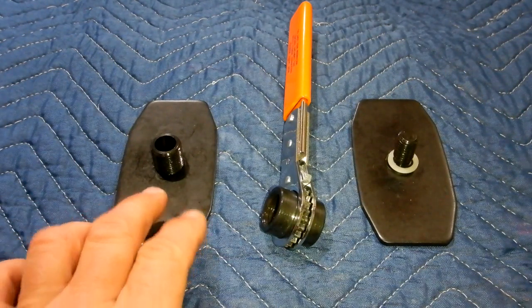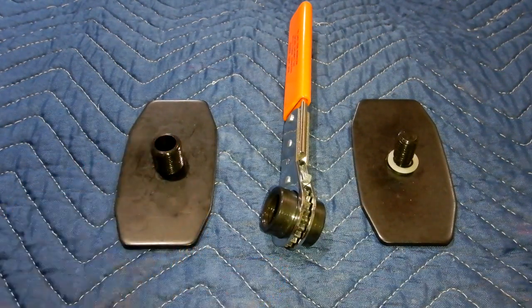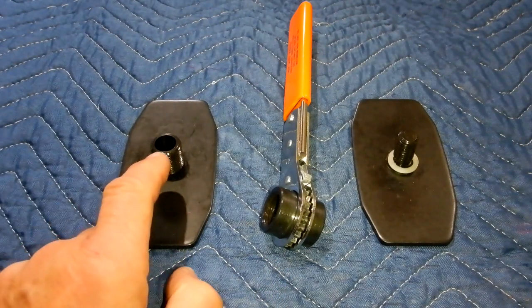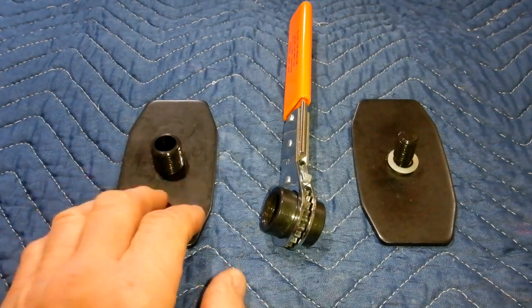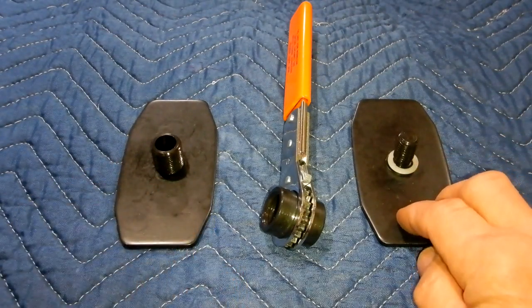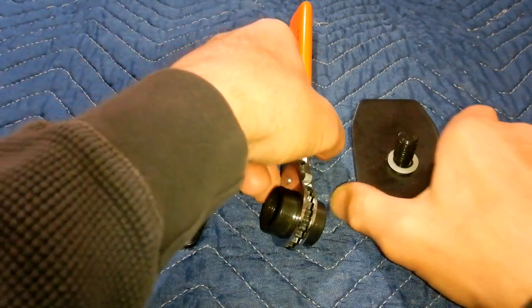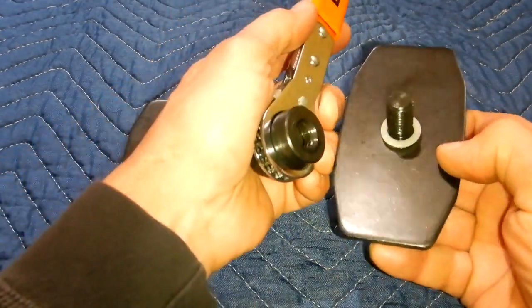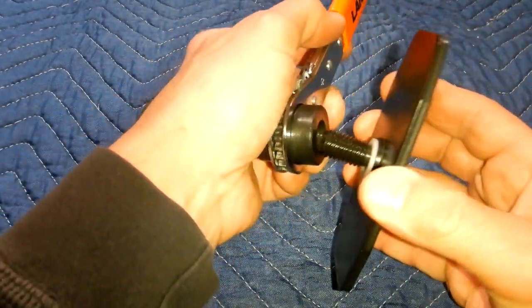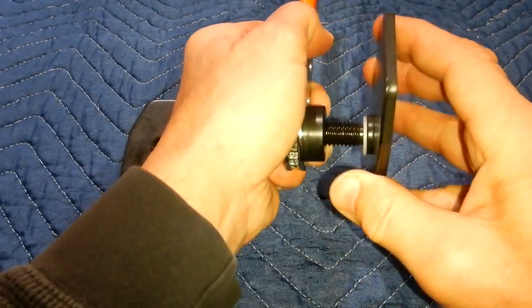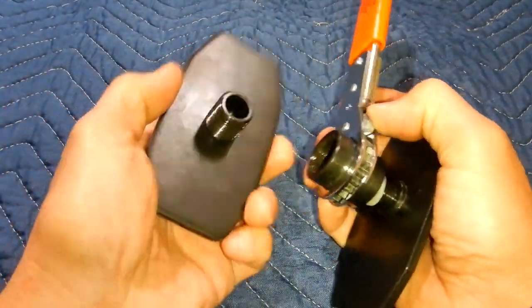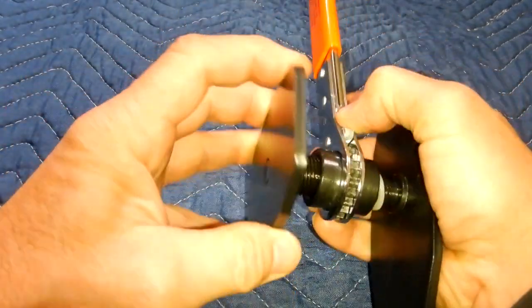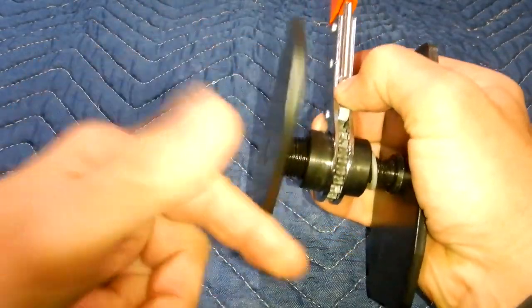So the secret to this: this stud has right hand threads, so as you know, righty tighty, lefty loosey, right hand threads here, left hand threads here. So to turn this on, okay, with right hand threads you would turn it clockwise to engage the threads. Here you have to turn it counterclockwise to engage the threads. Here being right hand threads, it's the standard turn right.